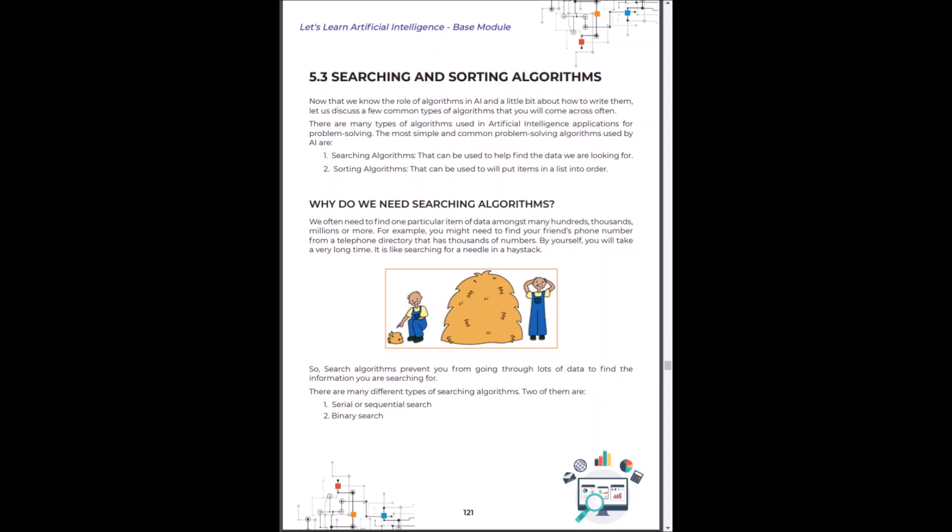Searching and sorting algorithms. It is critical for any machine to search and sort values. Search algorithms enable us to be more efficient. They help us to go through lots of data and find the information that we are searching for. There are two major kinds of search algorithms: Sequential search and binary search.